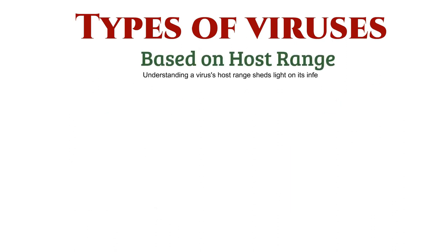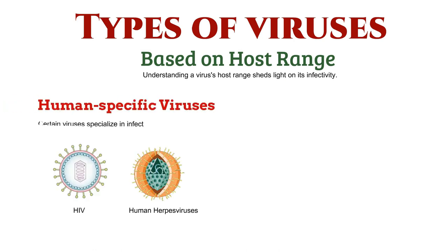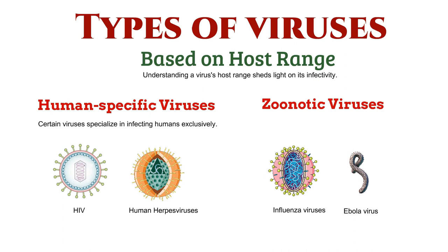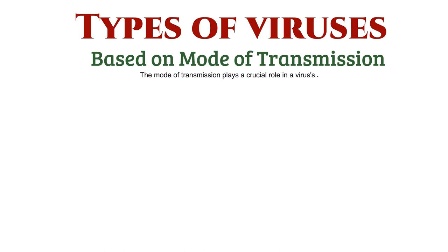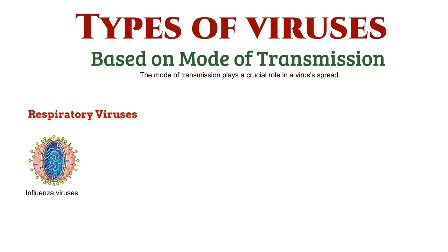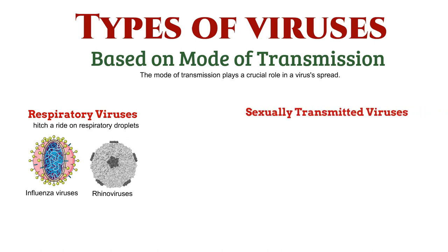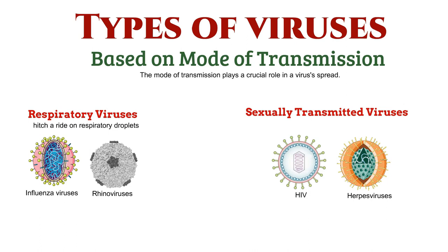Understanding a virus's host range sheds light on its infectivity. Certain viruses, like HIV and human herpes viruses, specialize in infecting humans exclusively. Conversely, zoonotic viruses, such as influenza viruses and Ebola virus, can move between animals and humans. The mode of transmission plays a crucial role in a virus's spread. Respiratory viruses, like influenza viruses and rhinoviruses, hitch a ride on respiratory droplets. Others, like HIV and herpes simplex virus, are transmitted through intimate contact.